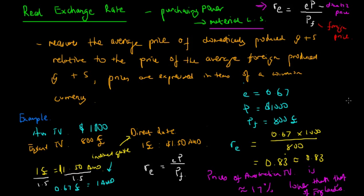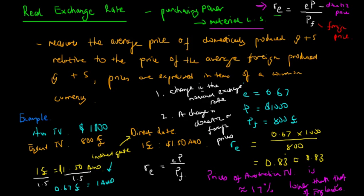The real exchange rate can change for either two reasons. One is a change in the nominal exchange rate—if the E here changes, then we will see a change in the real exchange rate. Or it can be due to two: the change in prices, change in domestic or foreign prices. This could be changed due to inflationary effects. If either P changes or PF changes, then again the real exchange rate will change. The real exchange rate measures the average price of domestically produced goods or services relative to the price of the average foreign produced goods or services, and prices are expressed in terms of the common currency in order to determine the relative purchasing power of each economy.